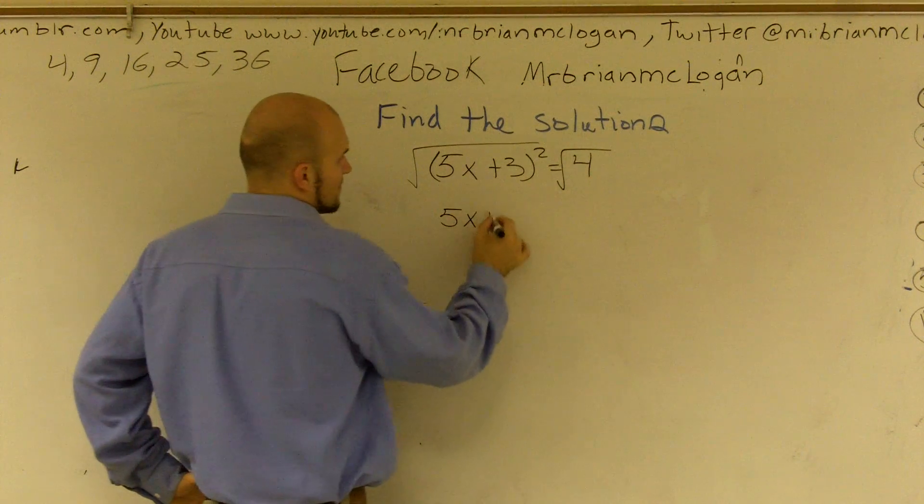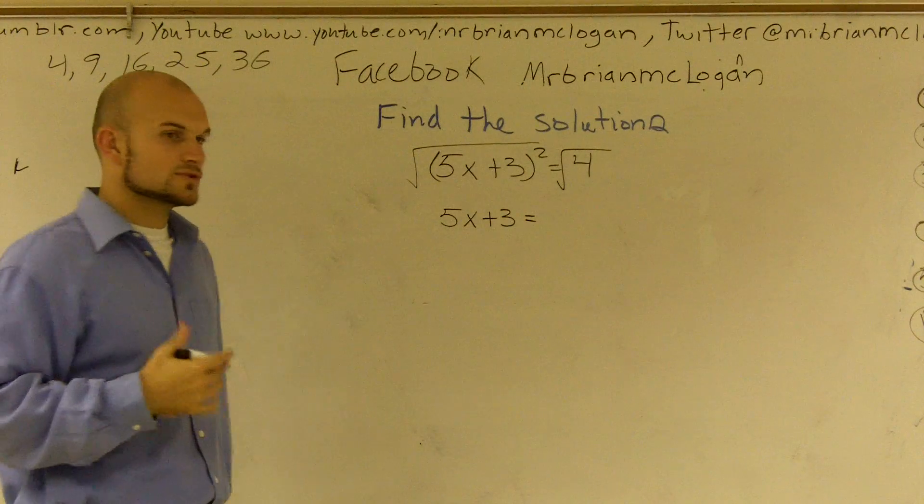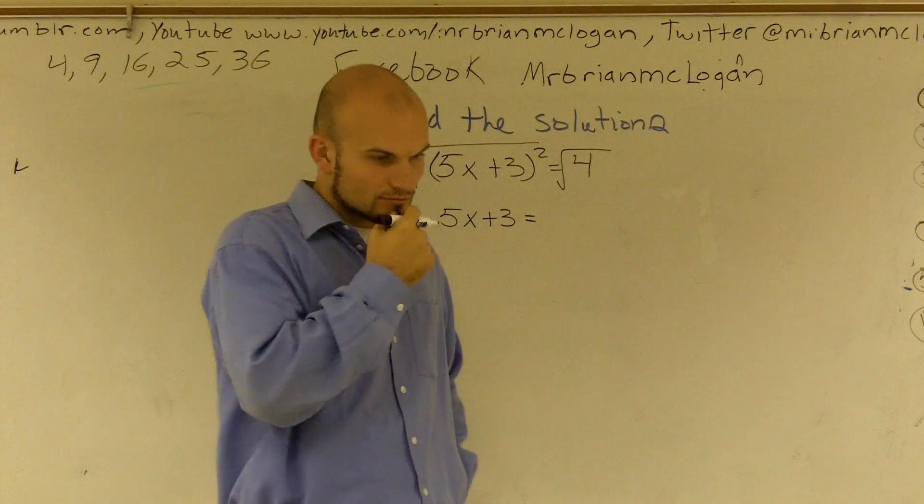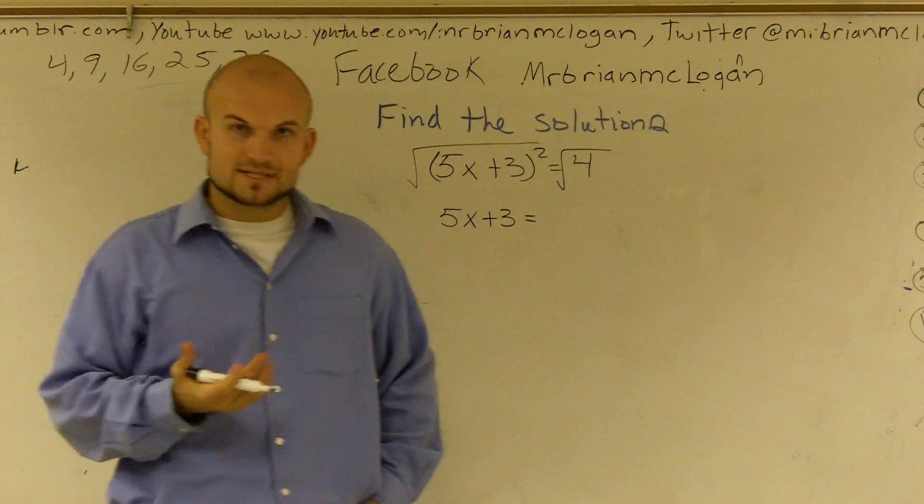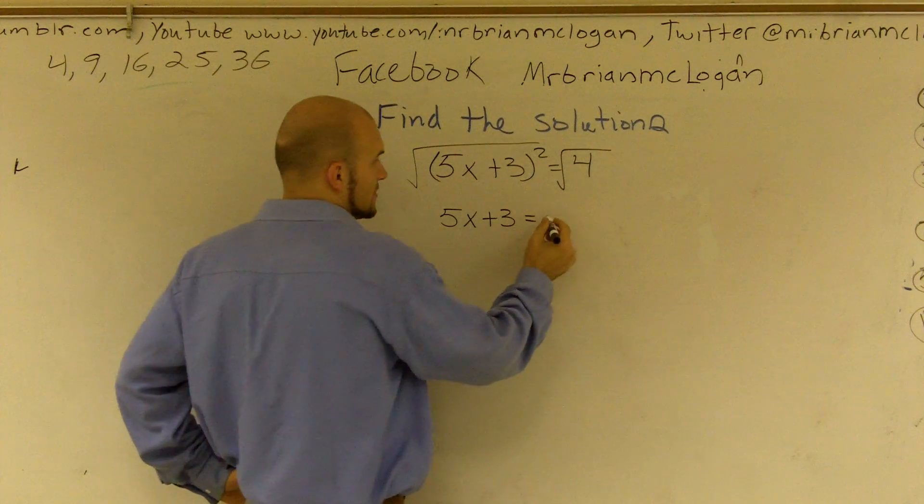So therefore, I'm going to have 5x plus 3 equals the square root of 4. Now, the square root of 4 could equal positive 2 or it could also equal negative 2. We're not really too sure which one it's going to equal.